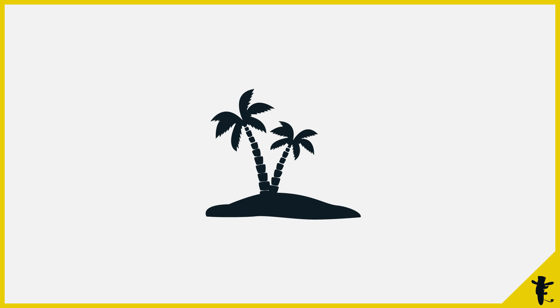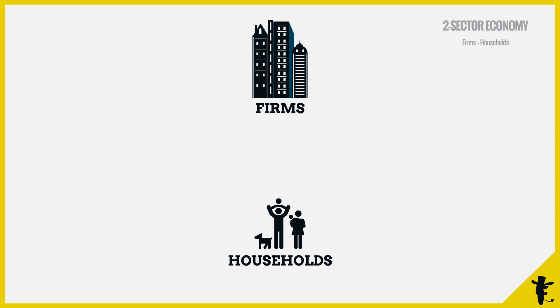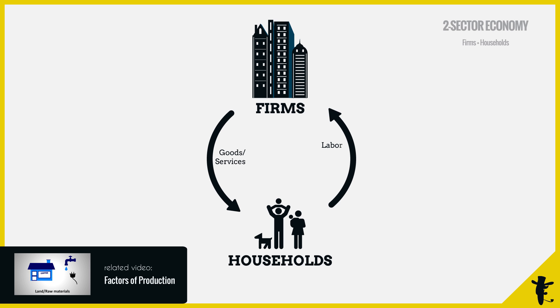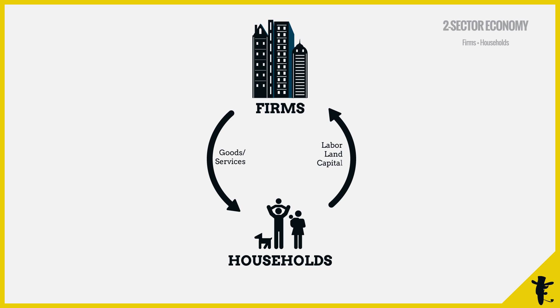Let's make things really simple. Imagine we're alone on an isolated island. There's no government, no trade, no savings. There's only firms and households. Firms provide households with goods and services — but out of thin air? No. Firms have to get factors of production from households. It can be labour, land, capital, or entrepreneurship — because some of us in households are going to be entrepreneurs.